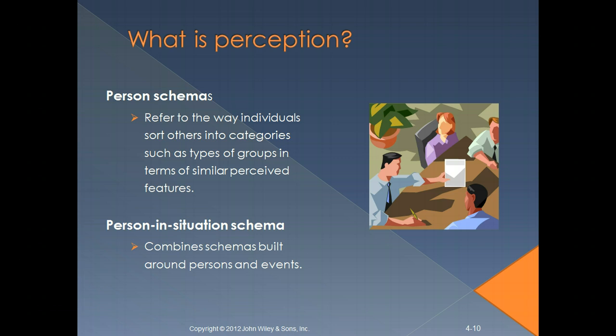A person-in-situation schema combines the schemas built around a person and events. Our recorded perception of reality uses these schemas like a script for a movie — it's a framework for us to understand and perceive the situation we're in much faster, and it's based on our experiences.